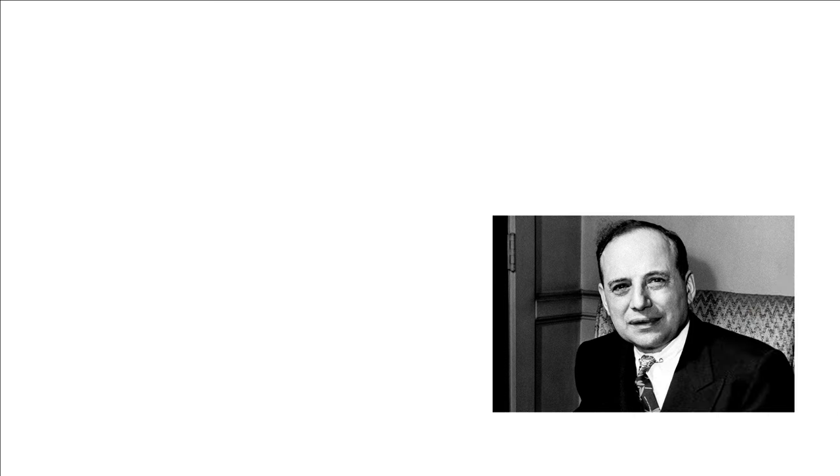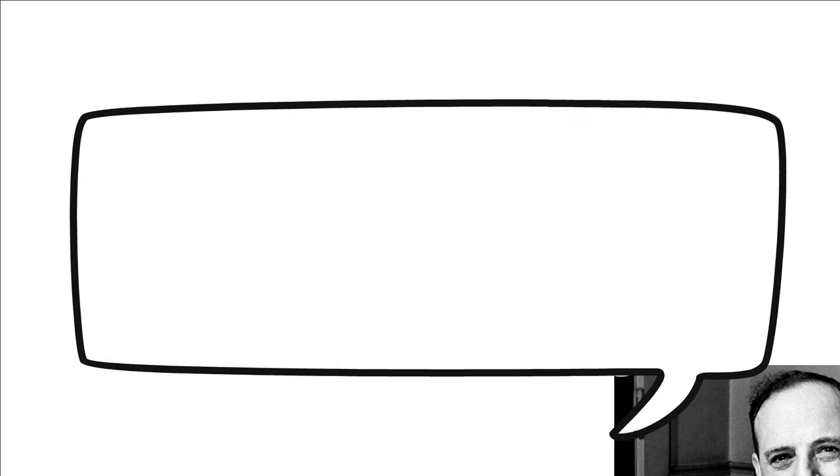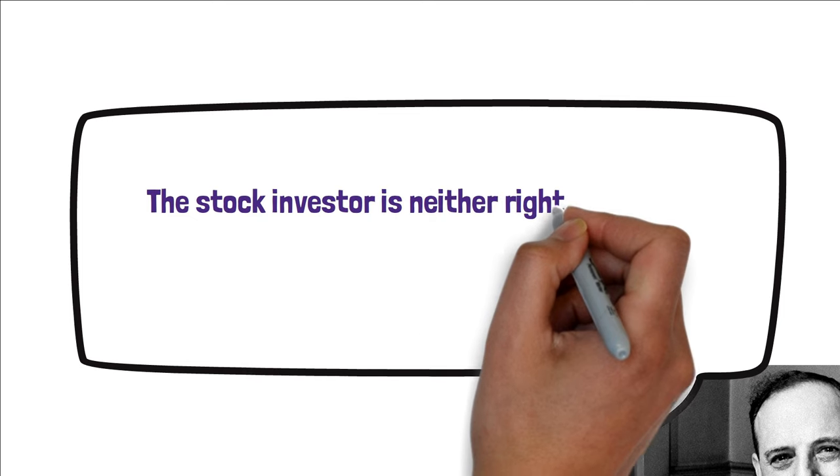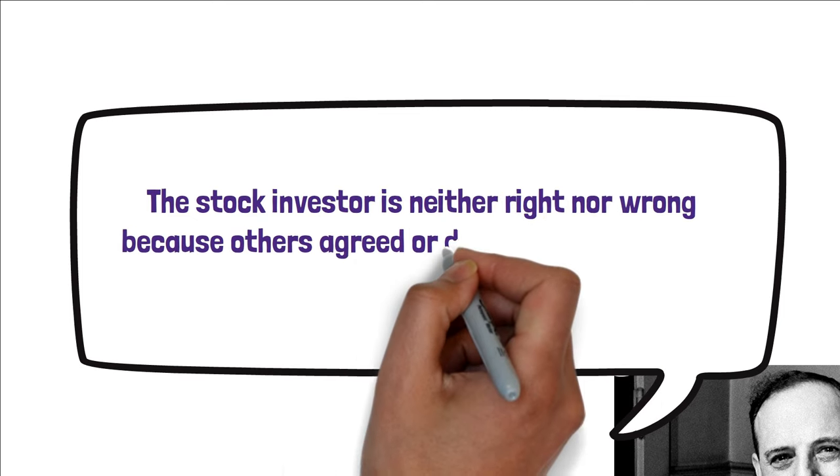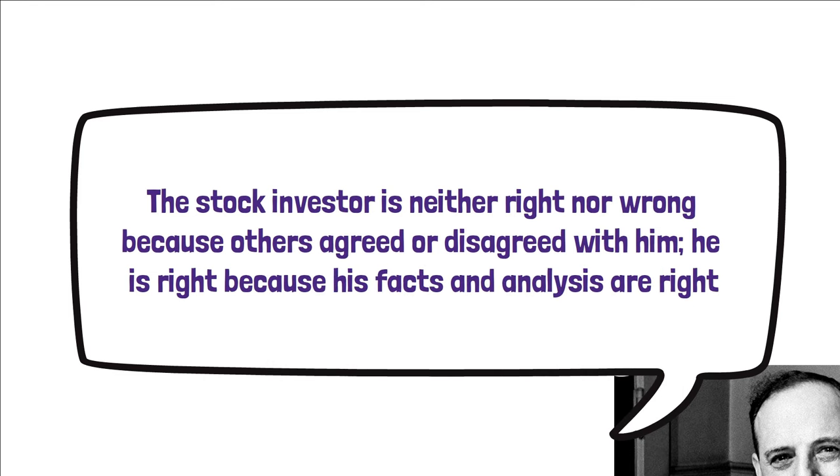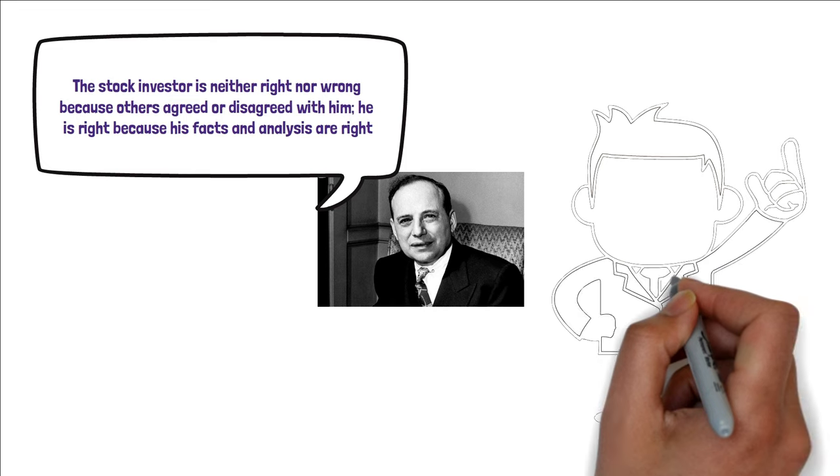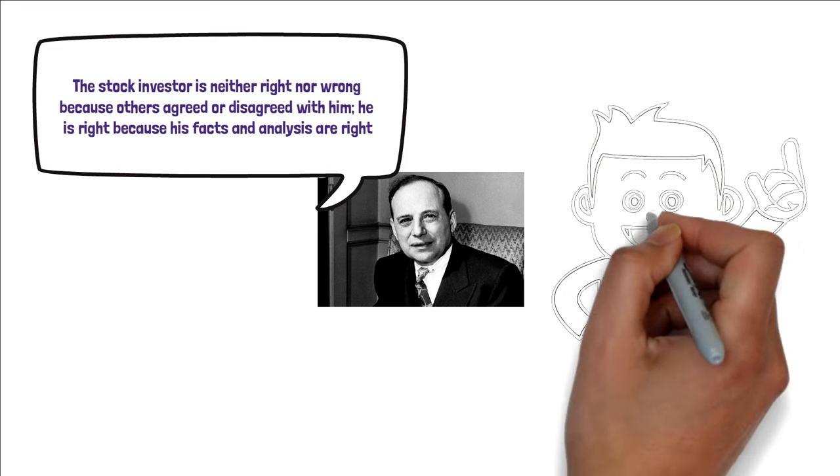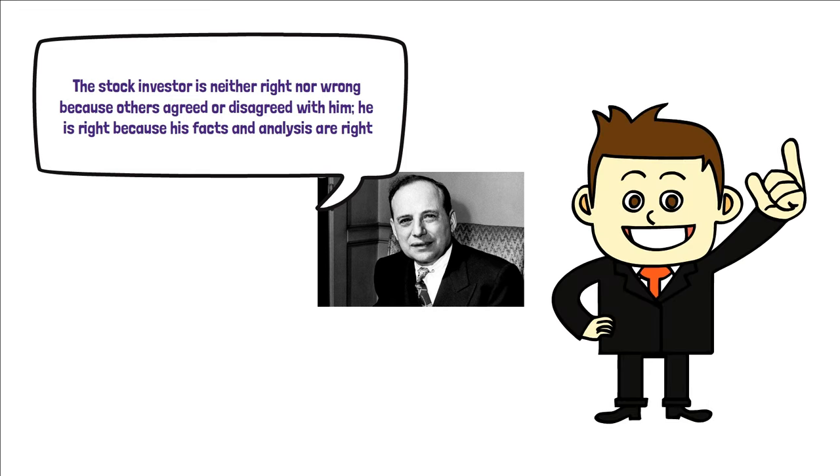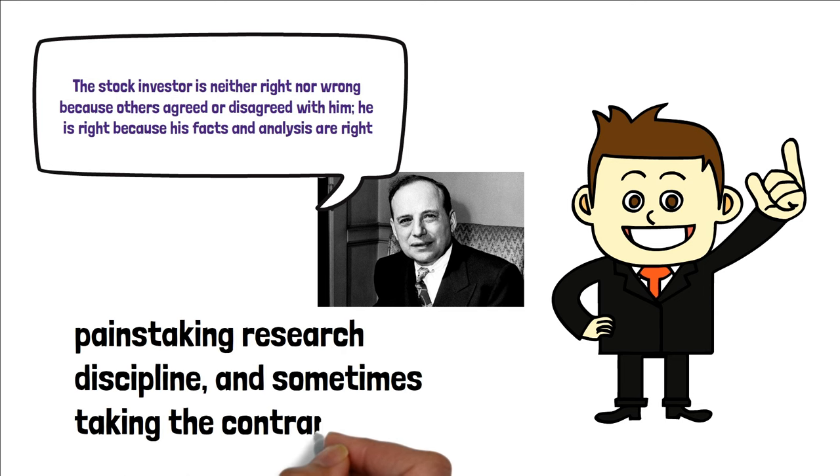Benjamin Graham, the father of value investing and a mentor to Warren Buffett once said, the stock investor is neither right nor wrong because others agreed or disagreed with him. He is right because his facts and analysis are right. This encapsulates the core of Munger's teaching. It's not about following the crowd, but painstaking research, discipline, and sometimes taking the contrarian view.